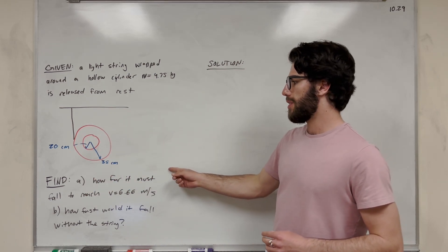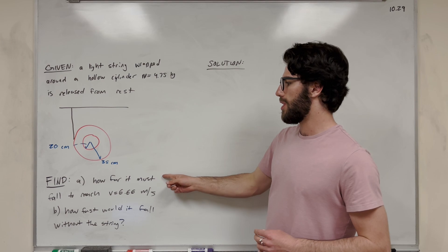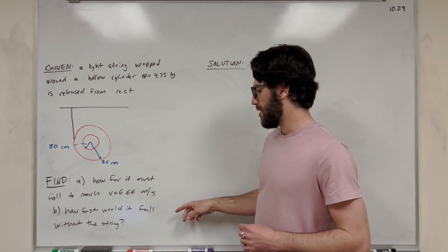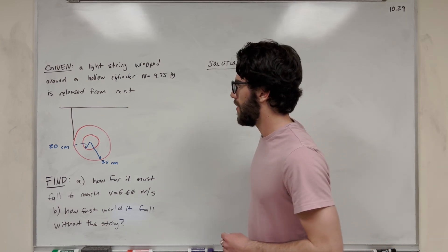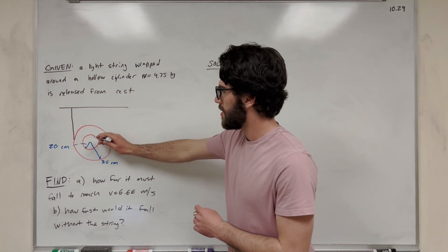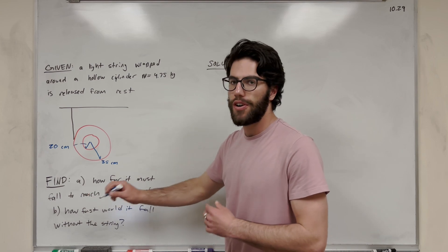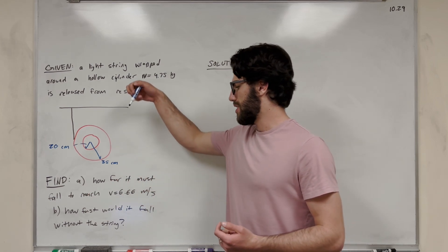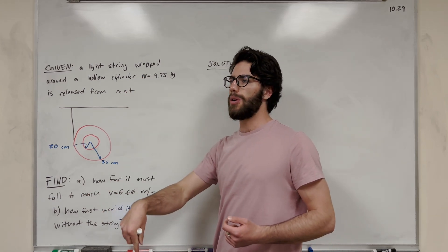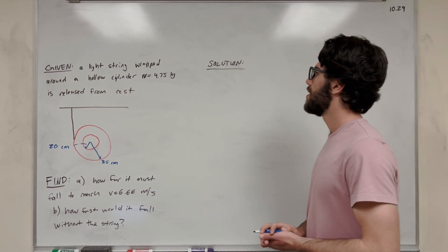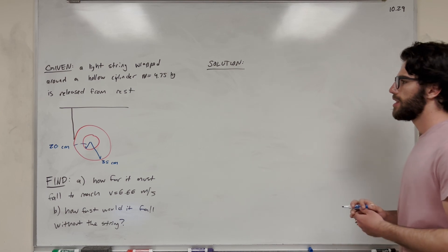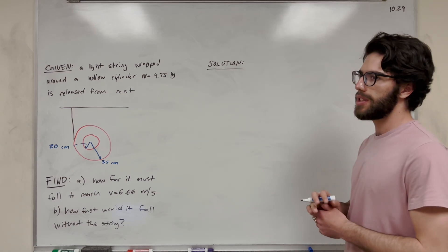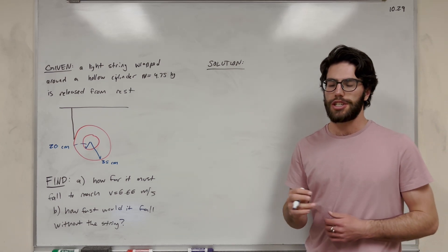For part A, we're going to find how far it's going to fall to reach 6.66 meters per second downward. So let's solve this. How are we going to solve this problem? This is going to be a work-energy problem.